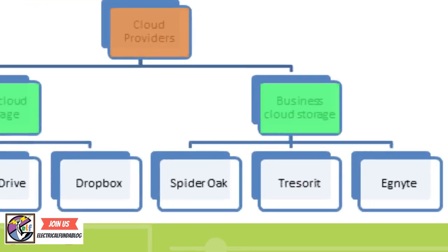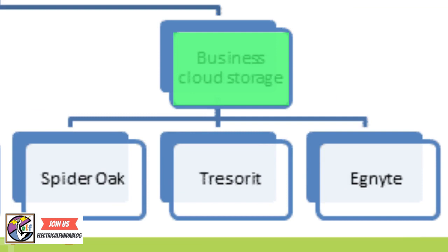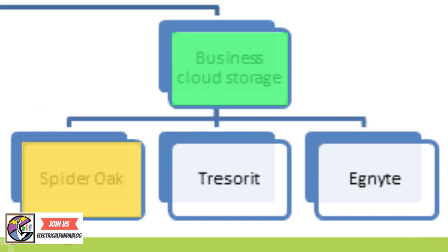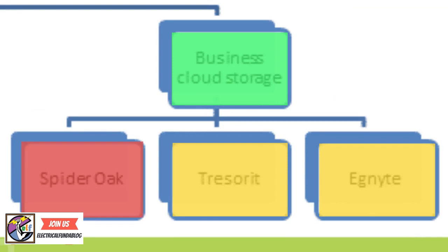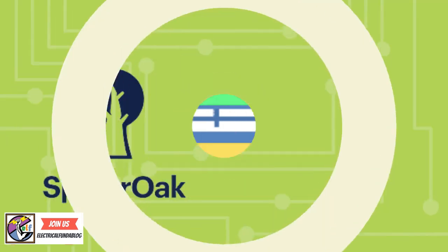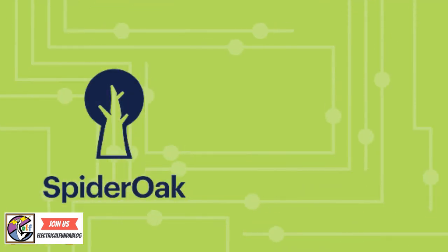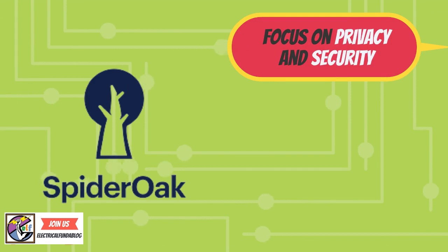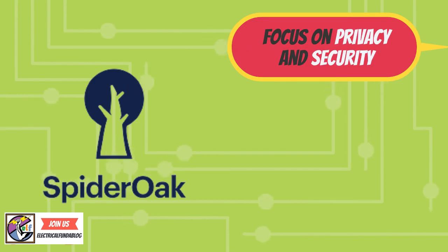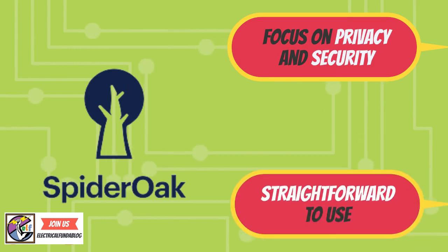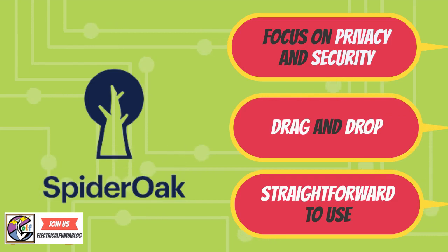For business cloud storage, examples include SpiderOak, Tresorit, and Ignite. The main focus of SpiderOak is on privacy and security. The tool has a very basic design, which makes the admin console and all central device management very straightforward to use. It also includes a drag-and-drop feature for organizing files.